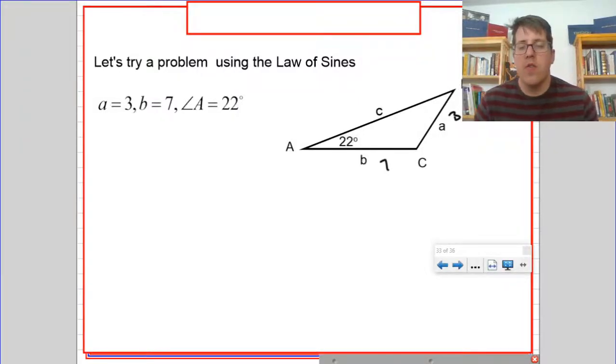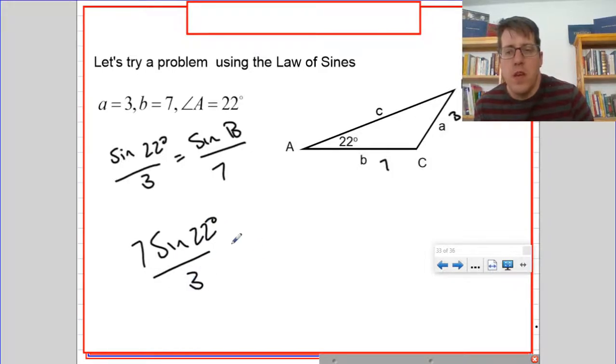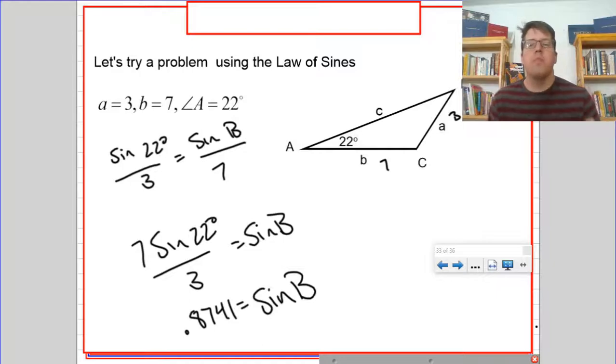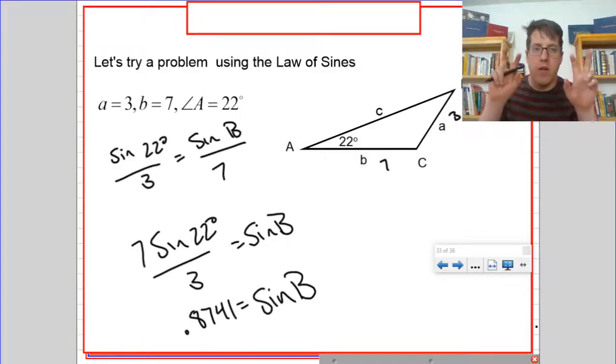Back to the problem. So before I just tell you how to figure out if there are two triangles, I want you to kind of think about how you would work your way through this problem. So we would start and we would say, oh, a and a. Okay, so I'm going to do the sine of 22 degrees over 3 equals the sine of B over 7. And I'm going to cross multiply and I'm going to say 7 times the sine of 22 over 3 equals the sine of B. I'm going to punch that into my calculator and then I'm going to stop. So I got 0.8741 is the sine of B. But here's the thing. There are two angles between 0 and 180, so think of triangle angles, that have a sine of 0.8741.